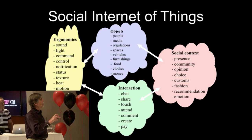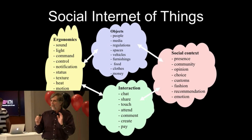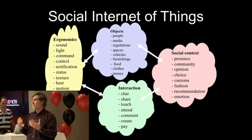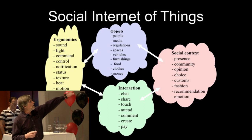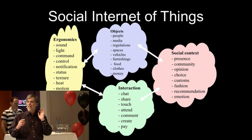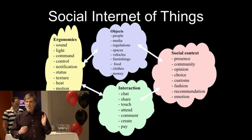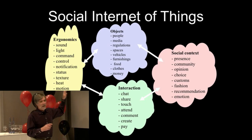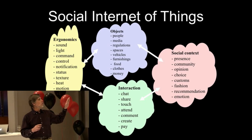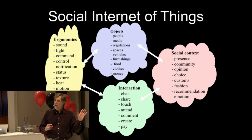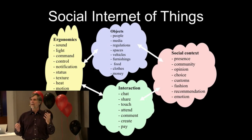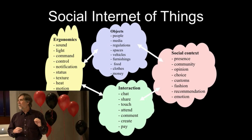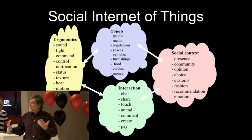The next box is ergonomics. Ergonomics defines another set of properties that the objects have that allow you to use them. So all of these objects are going to have a huge diversity of ways that you can interact — and these are properties of the object. Very different IT devices now. Light, sound, command, control, notification, texture, motion, shape, quality — all of these. A way of interacting with things. These two things, objects and ergonomics, come together and they create interaction. This is how people now interact with these things.